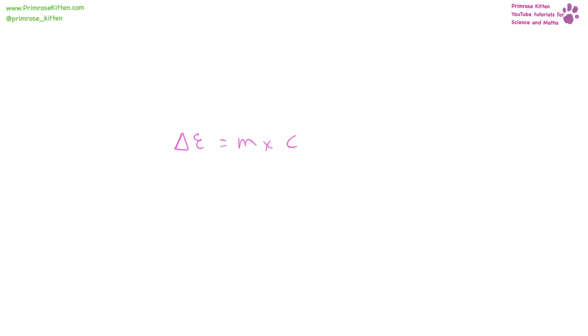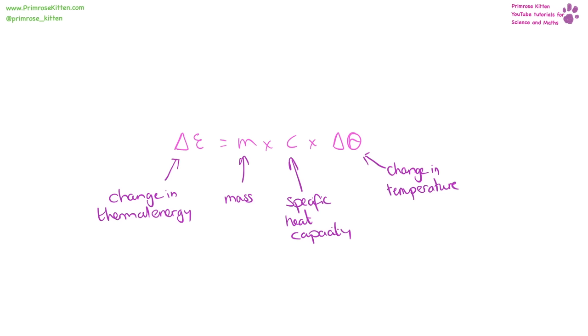Change in thermal energy is equal to mass times specific heat capacity times change in temperature. Change in energy is measured in joules, mass is measured in kilograms, specific heat capacity is measured in joules per kilogram degrees C, and change in temperature is measured in degrees C.